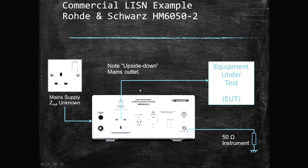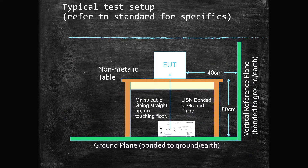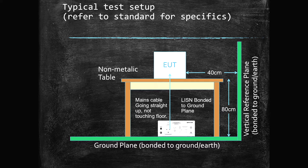One point to note: the mains socket looks to be upside down, and there's a good reason for that. Your typical setup has the LISN on the floor, bolted to a conductive ground plane, with a vertical reference plane on the wall and a non-conductive — probably wooden — table that your device under test sits on. All of this will be defined in the standard you're testing to. You should really refer to the standard to make sure you're doing it as intended to get repeatable results. With the LISN bolted down, ground planes installed, and a nice space away from RF sources, we can test in a repeatable, controlled way.